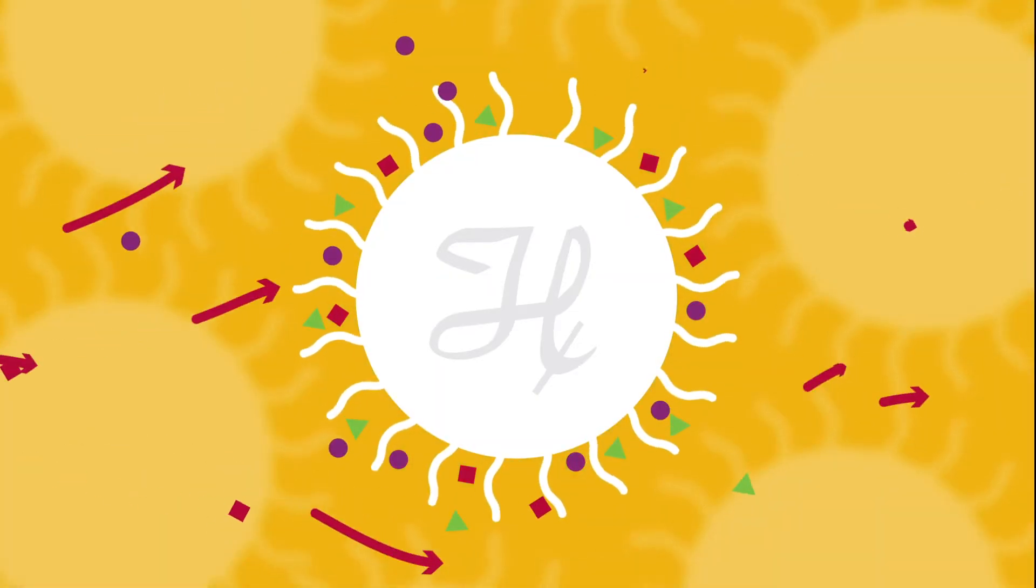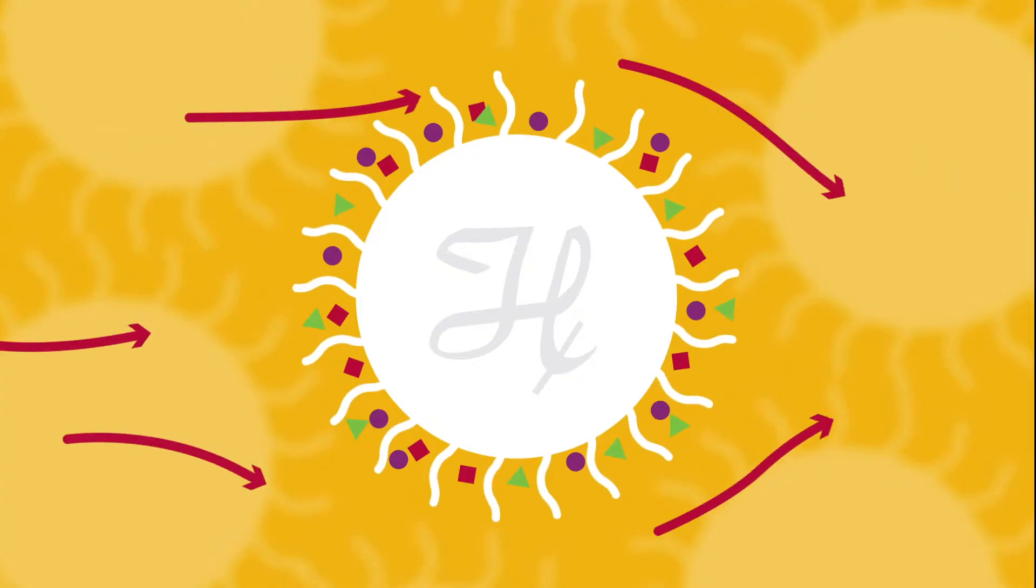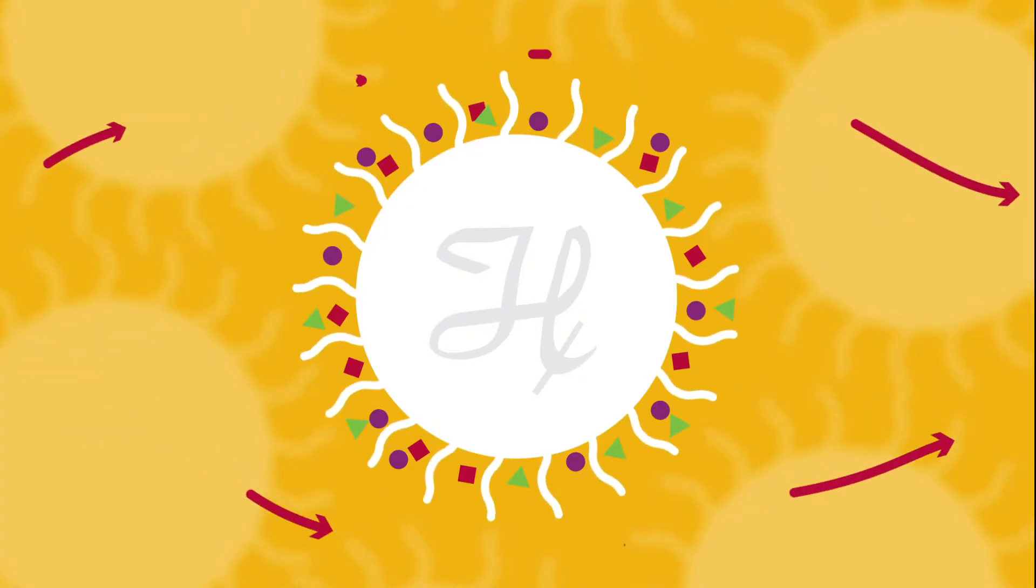Hamilton's PRP C18 withstands temperatures greater than 100 degrees Celsius and is stable in mobile phases ranging from pH 1 to 14.